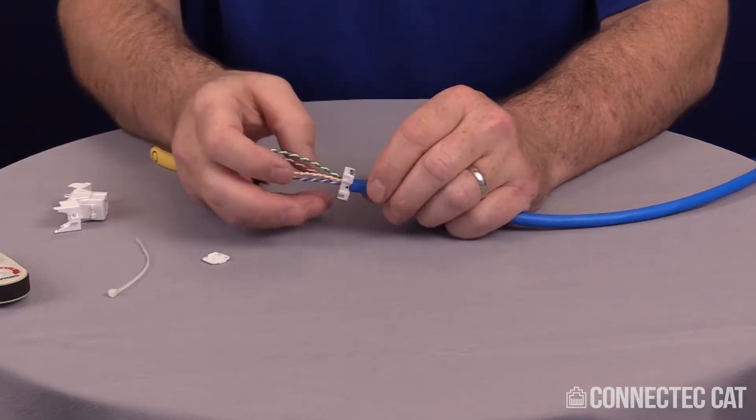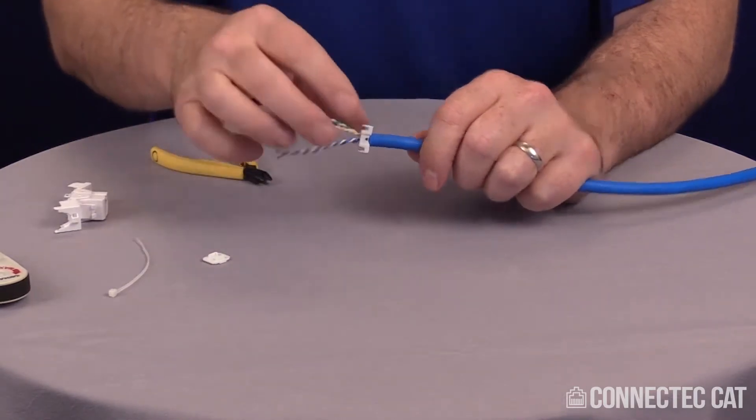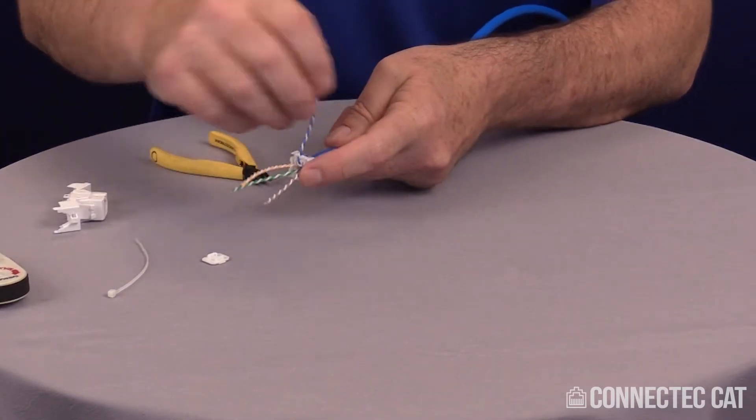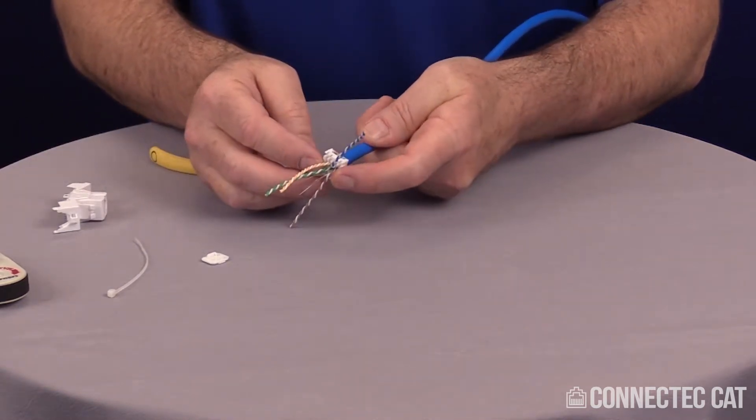We're going to be doing 568B, so you want to line your load bar up with your conductors. I've got my blue over here, so I want to spin this around and get my blue next to my blue, brown next to brown, and then I can line the other pairs up. I'm going to be doing 568B.